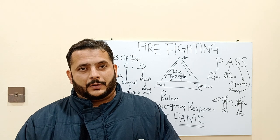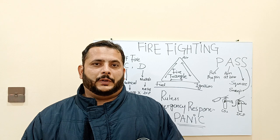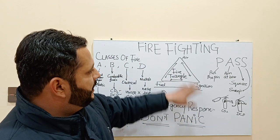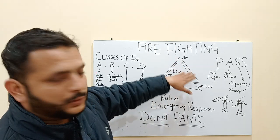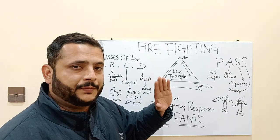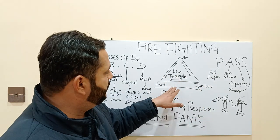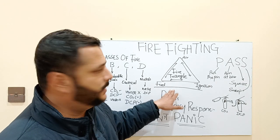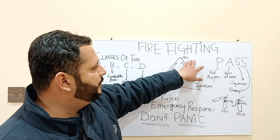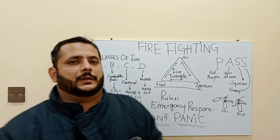Fire is a chemical reaction which comprises three constituents. When these constituents come in contact with each other, it results in a fire. In this picture you can see a triangle called the fire triangle. In this fire triangle there are three constituents: one is the ignition or spark, another is the fuel or source, and the third is air, which is present all around in our environment. When these three things come in contact with each other, it results in a fire.